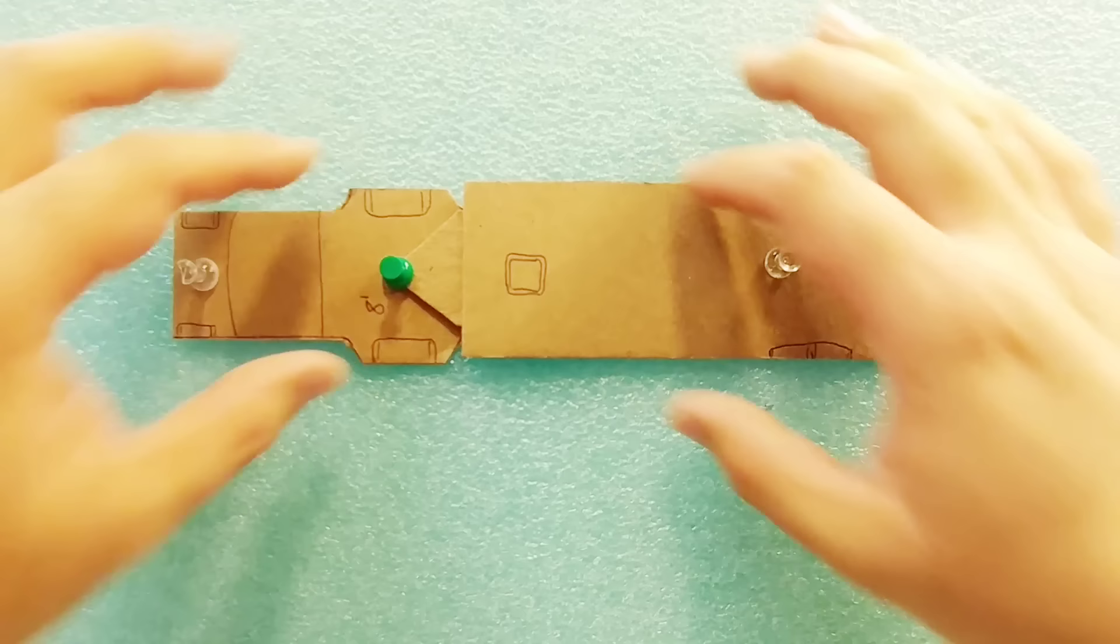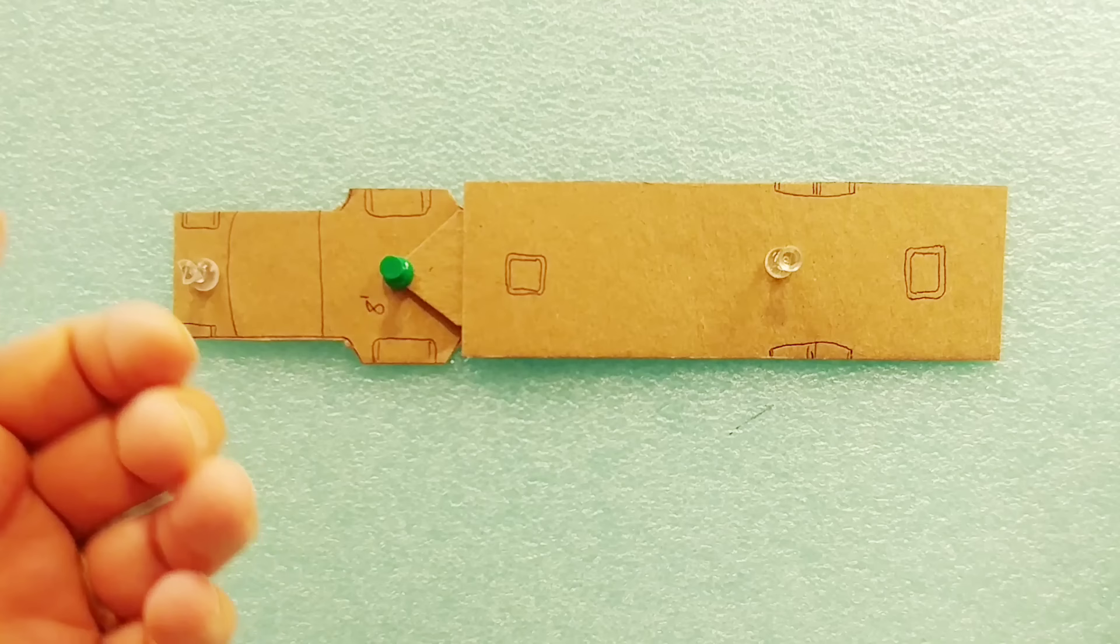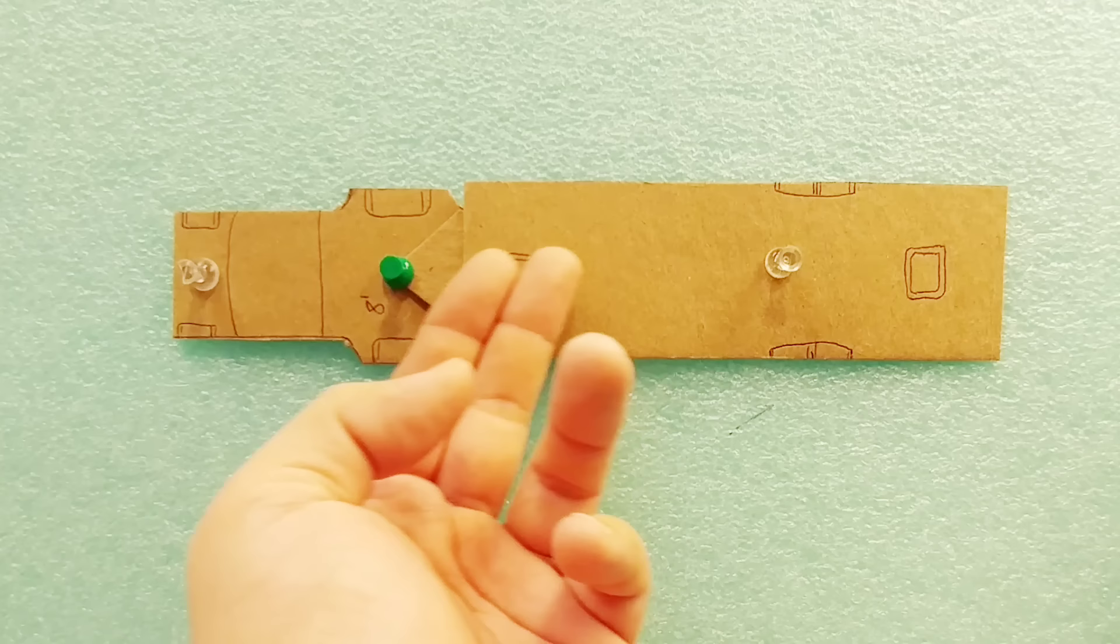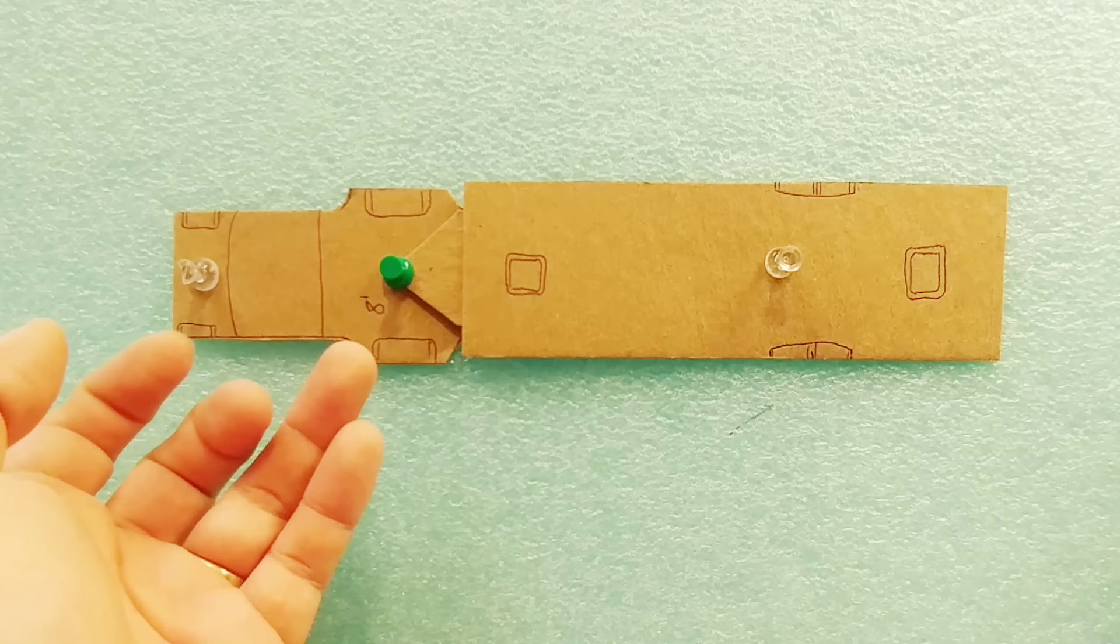Now I didn't explain this at first but these thumbtacks essentially represent traction. It represents where tires make contact to the road and where there is essentially no force on the road. So naturally anywhere underneath this middle point of the trailer where nothing is touching the ground there is nothing to keep it stuck to the ground. Same with the truck. That's why if you notice the traction points are where the thumbtacks are.